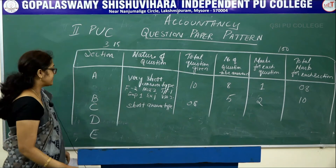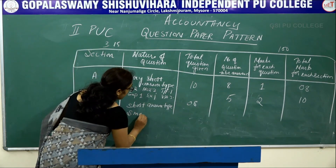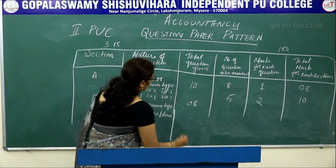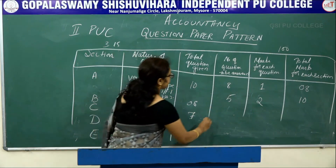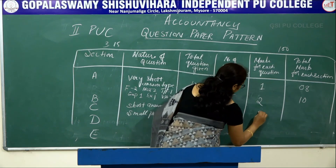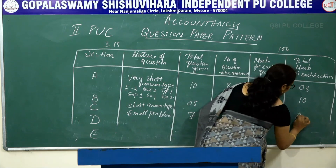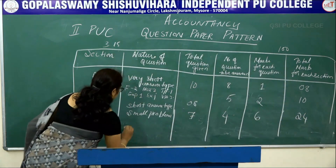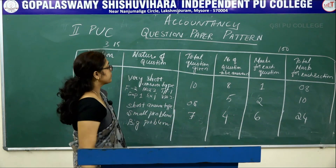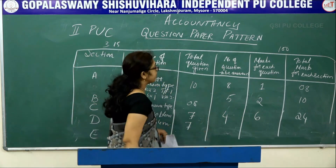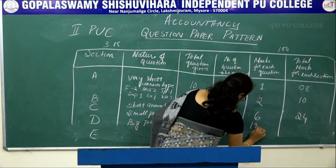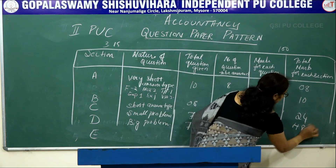Part C consists of small problems. Total number of questions given is 7. Number of questions to be answered is 4, and each question carries 6 marks, so total 24 marks. Part D consists of big problems. Total number of questions is 7, number of questions to be answered is 4, marks allotted per question is 12, and total marks is 48.